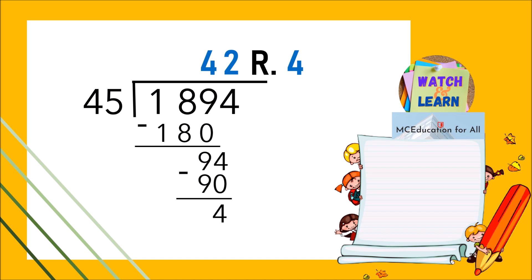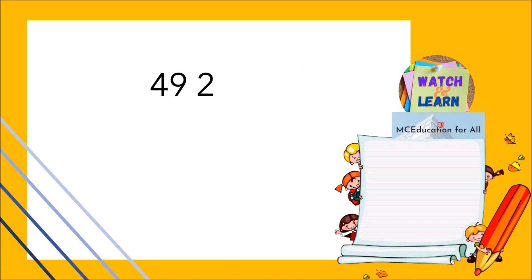Another example, 49,225 divided by 56. Write zeros on top of 4 and 9. Then take 492. Estimate how many times 5 goes into 49. The answer is 9. 9 times 56 is 504.